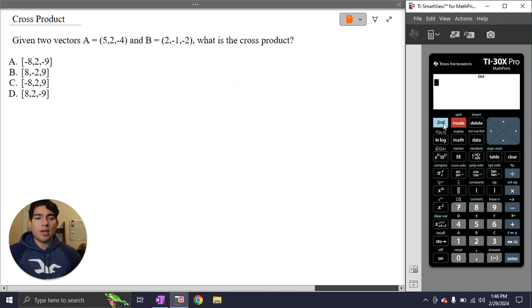The way we do that is we hit second, then we hit vector once more. This time we go to the math tab and we hit 2 for cross product. Then we hit second vector one more time and we grab our first vector U.